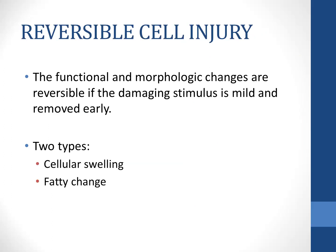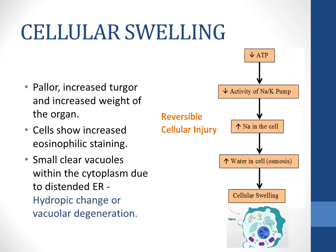Reversible cell injury occurs when the damaging stimulus is mild and removed early. The functional and morphological changes are reversible and the cell can return back to its normal condition. There are two types of reversible cell injury: cellular swelling and fatty change.